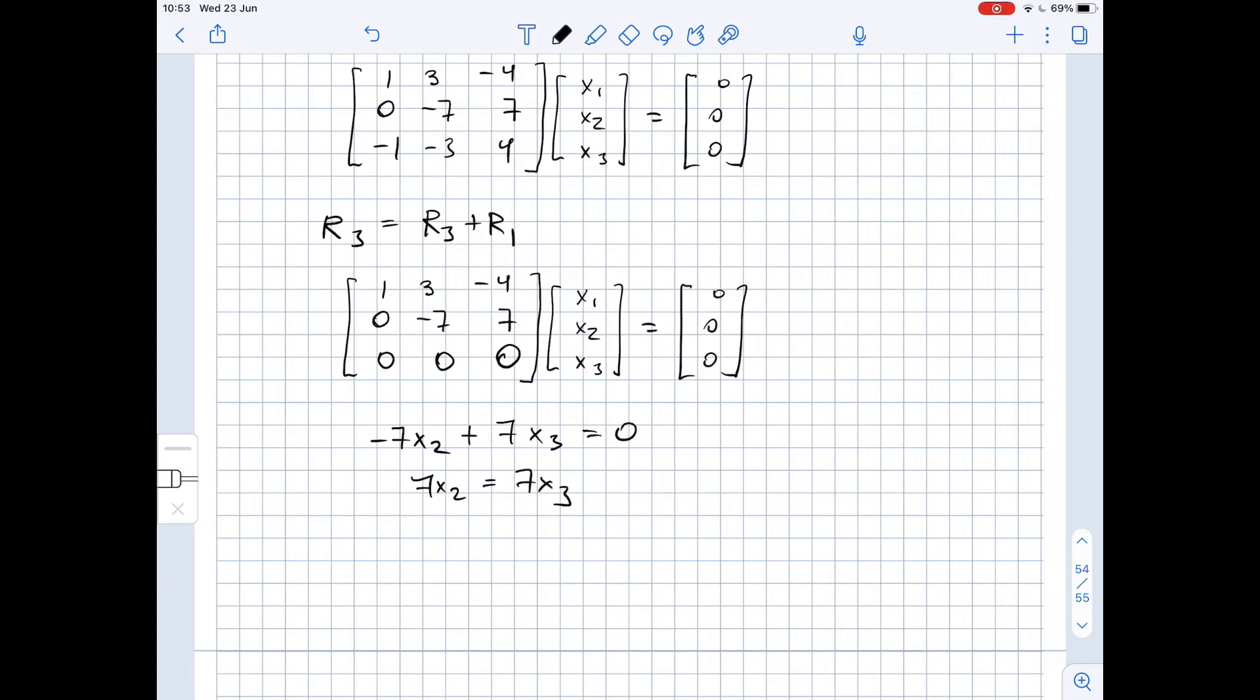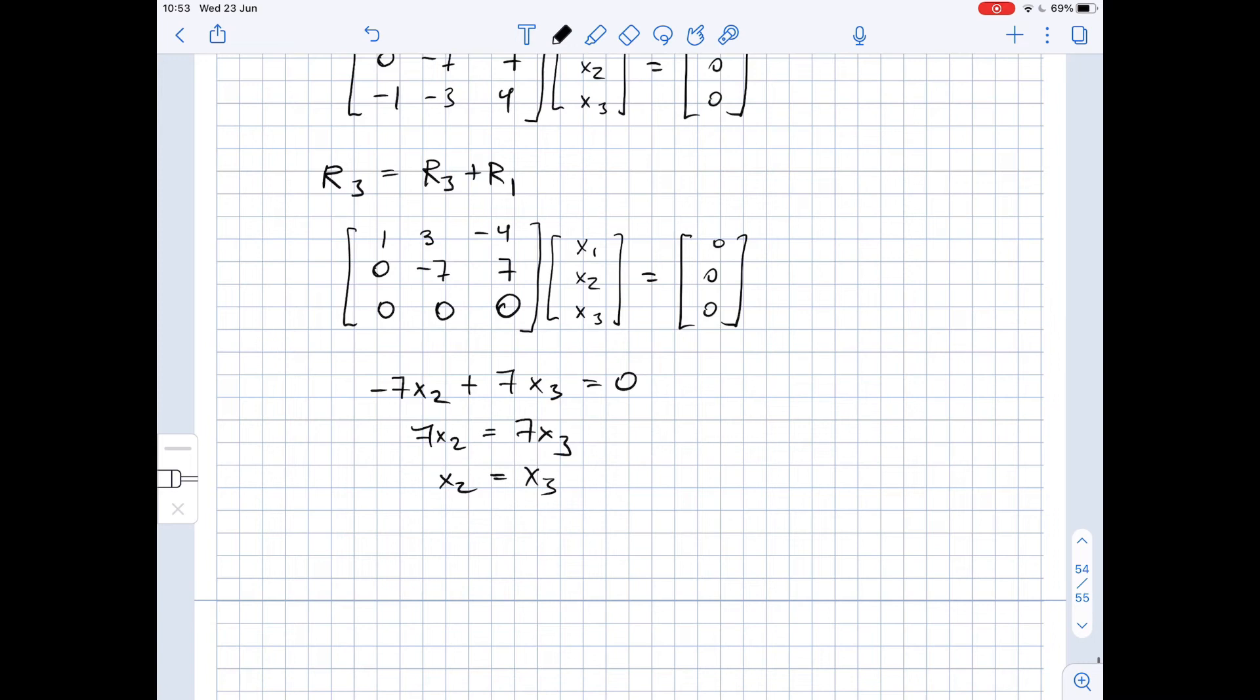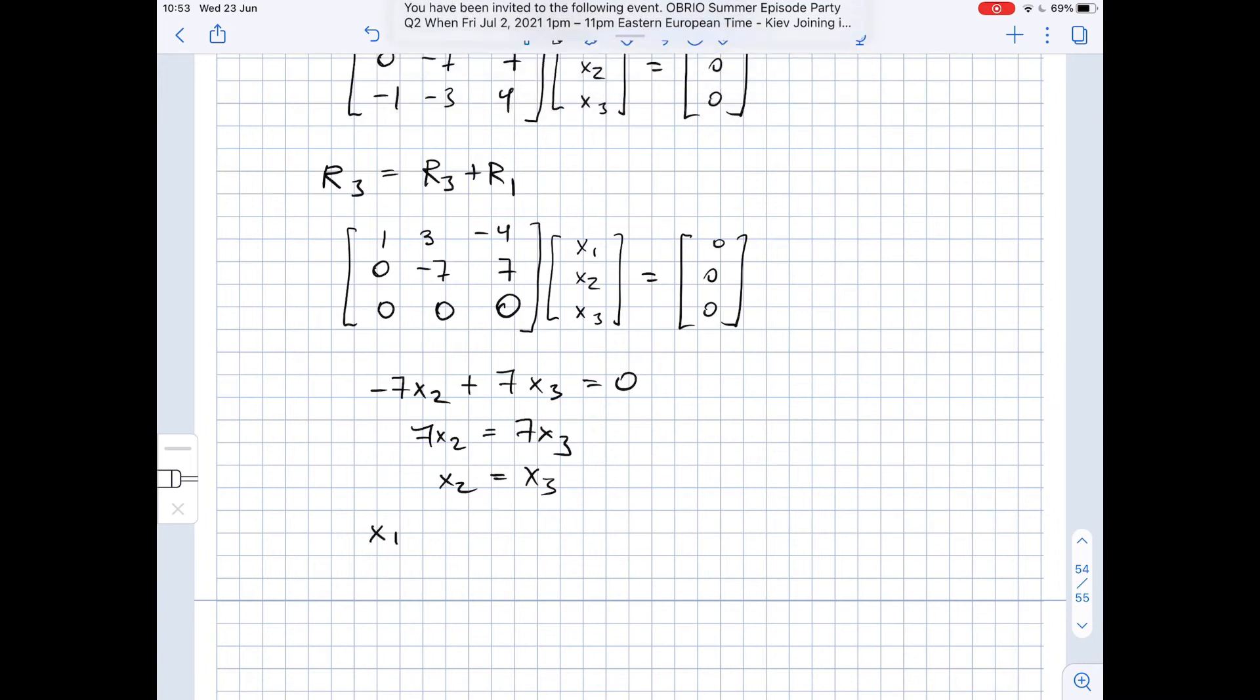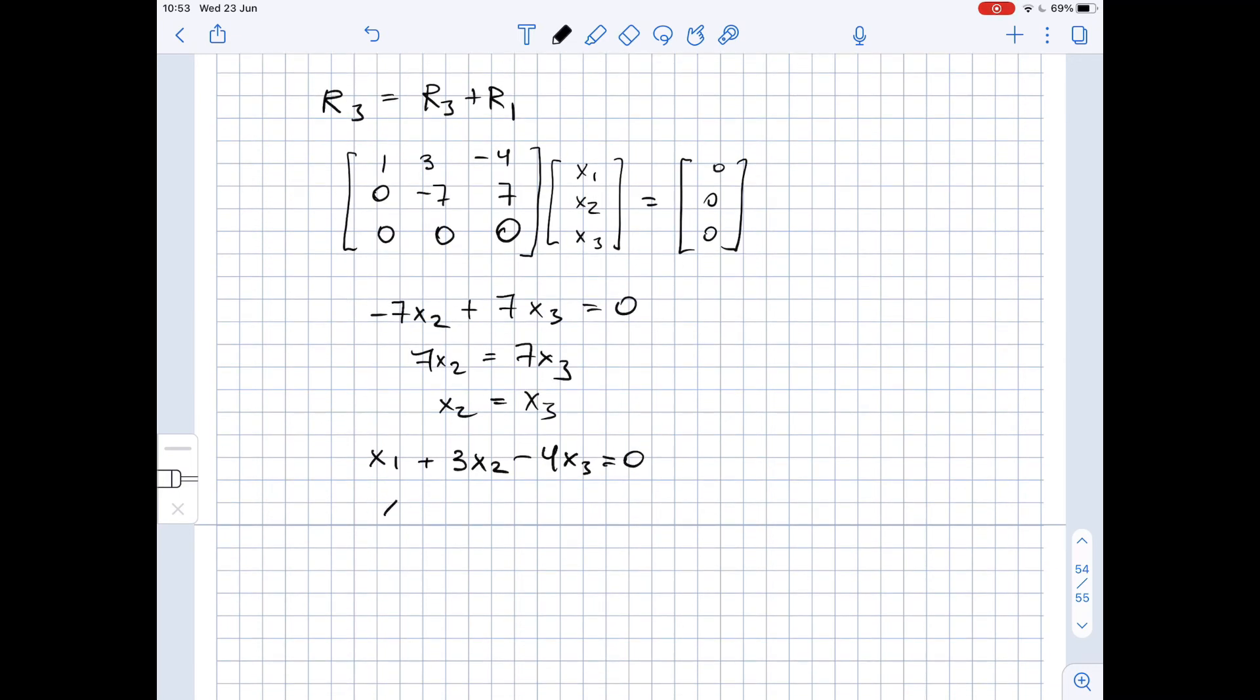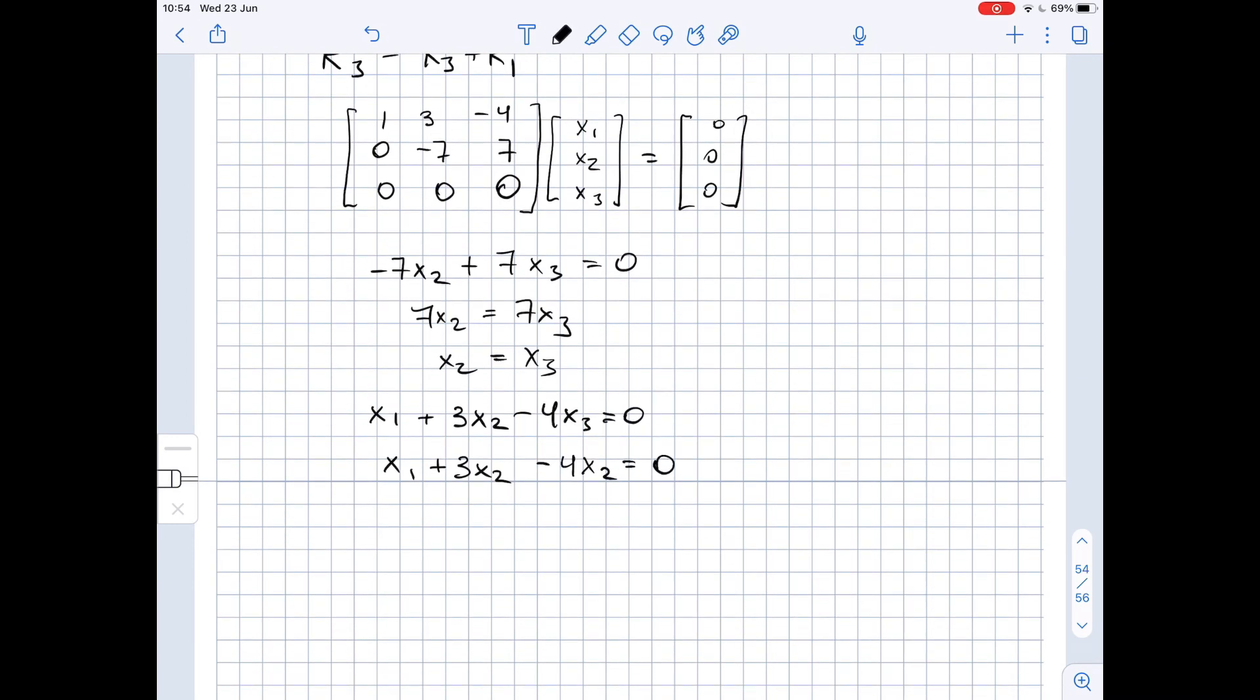We also see that x1 plus three x2 minus four x3 equals zero. That means that x1 plus three x2 minus four x2 equals zero, since we know that x3 equals x2. We substitute x2 for x3 here, so we get that x1 equals x2.